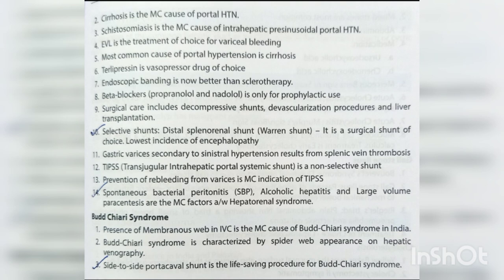TIPS (Transjugular Intrahepatic Portosystemic Shunt) is a non-selective shunt; prevention of re-bleeding from varices is the most common indication. Spontaneous bacterial peritonitis, alcoholic hepatitis, and large-volume paracentesis are the most common factors associated with hepatorenal syndrome. Budd-Chiari syndrome: presence of membranous web in the IVC is the most common cause in India. It is characterized by spiderweb appearance on hepatic venography. Side-to-side portocaval shunt is a life-saving procedure for Budd-Chiari syndrome.